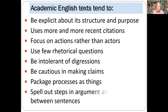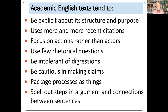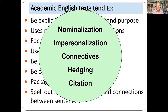English academic writing employs more recent citations, uses fewer rhetorical questions, focuses on actions rather than actors, is less tolerant of digressions, is more cautious in making claims with many hedges, has stricter conventions for labeling subsections, and uses more sentence connectors such as 'therefore' and 'however.' Because of this, English teachers in universities tend to focus on nominalization, impersonalization, connectives, hedging, and metadiscourse.